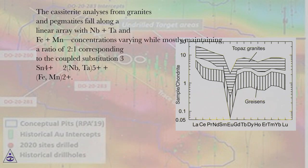The cassiterite analyses from granites and pegmatites fall along a linear array with Nb+Ta and Fe+Mn concentrations varying while mostly maintaining a ratio of 2 to 1, corresponding to the coupled substitution 3Sn4+ ↔ 2Nb,Ta5+ + Fe,Mn2+.